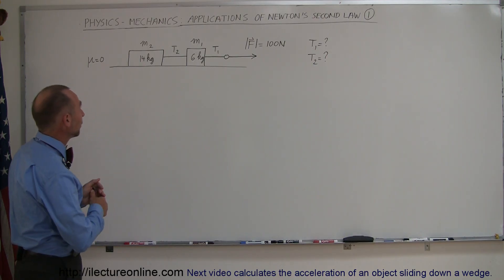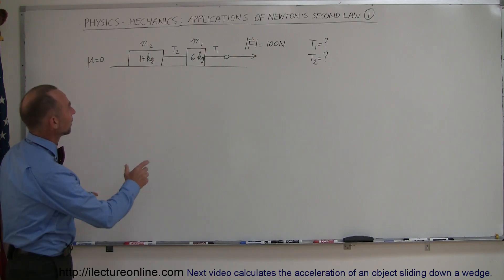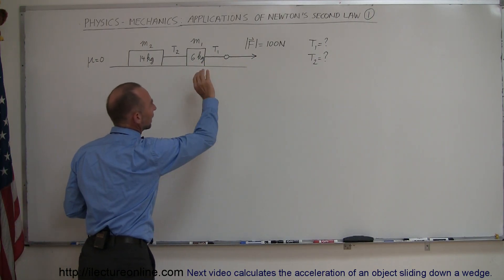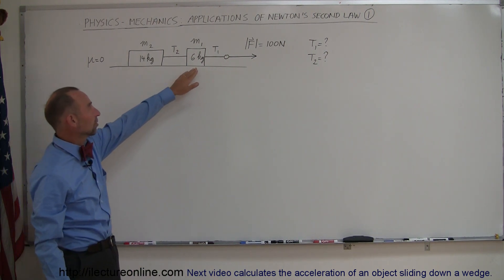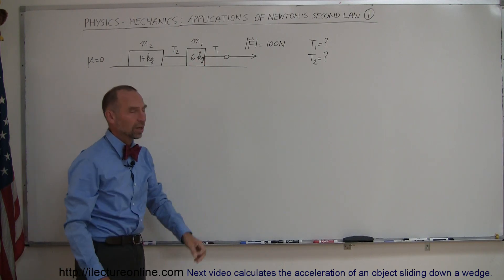Starting with number one, we have two objects sitting on a horizontal surface. They're connected with a string. The first one has a string attached to it with a little ring, and we pull on the ring with a force of 100 Newtons. This one is 14 kilograms, this one is 6 kilograms. The question is, what is the tension on these strings?